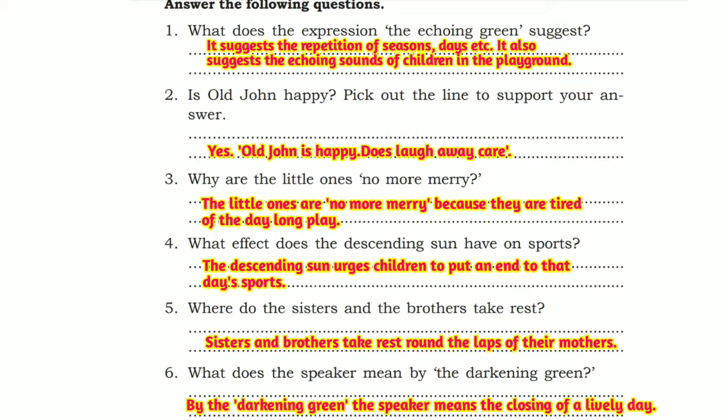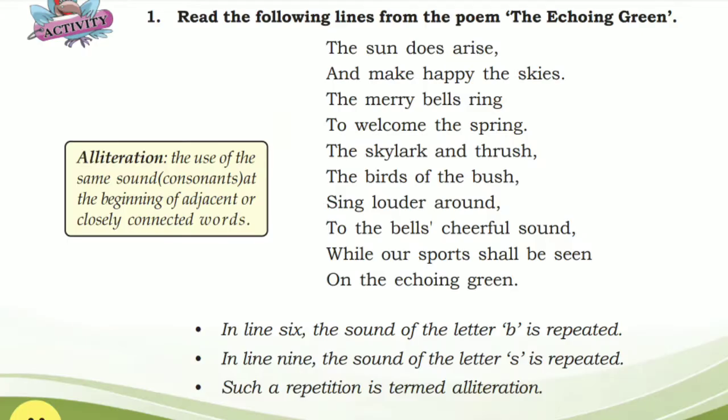The first activity: read the following lines from the poem 'The Echoing Green.' In line six, the sound of the letter B is repeated: 'the birds of a bush.'